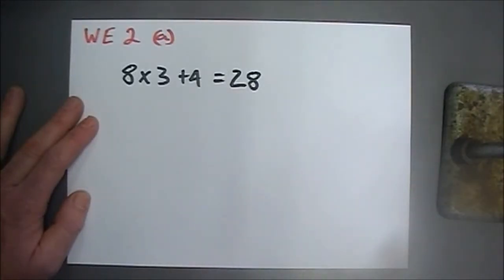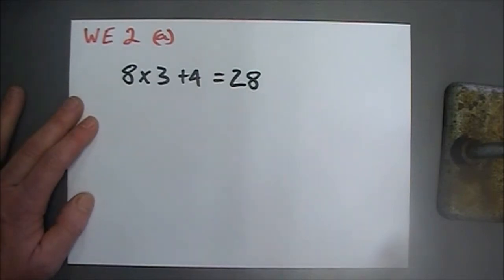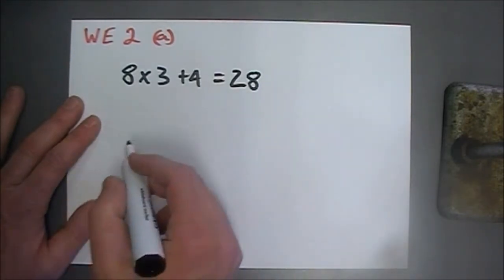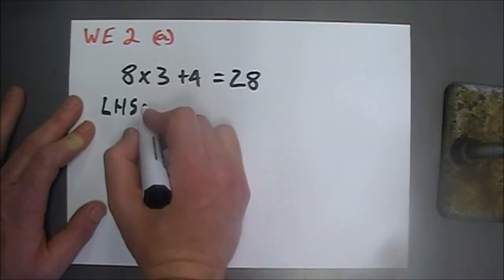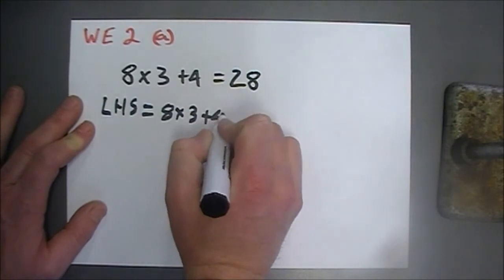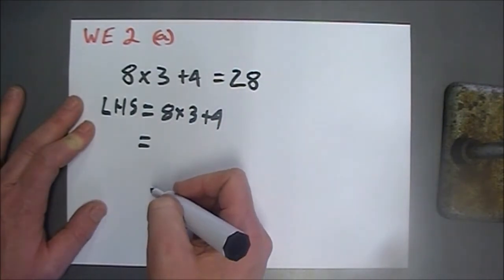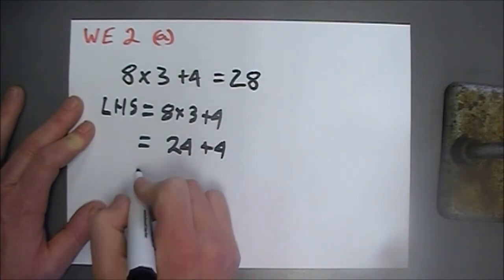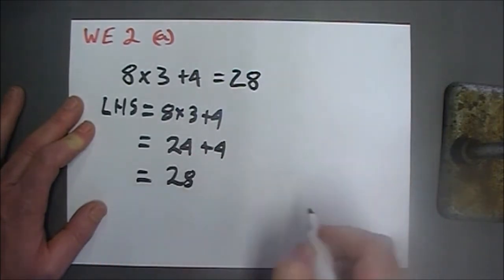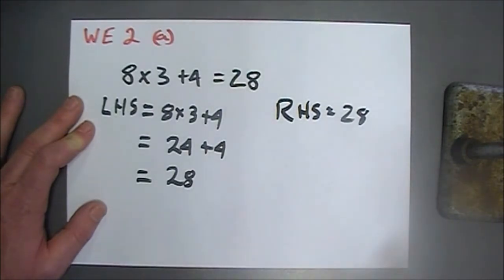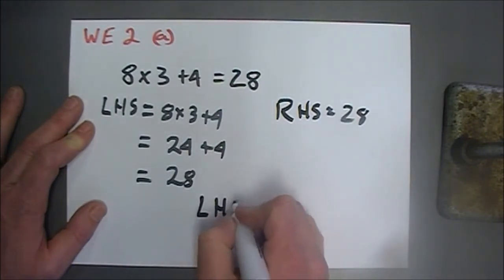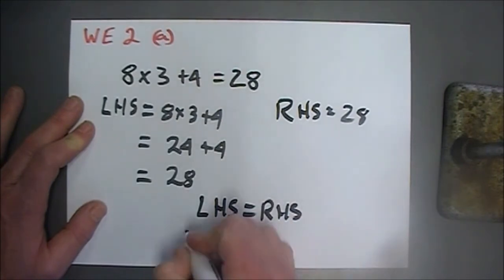Worked Example 2, page 378 — decide which of the following number sentences are true. Part A: 8 times 3 plus 4 equals 28. Looking at the left-hand side, 8 times 3 is 24, plus 4 equals 28. The right-hand side also equals 28, so the left-hand side equals the right-hand side — true.